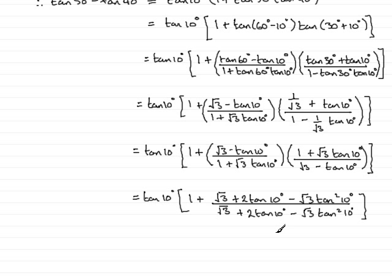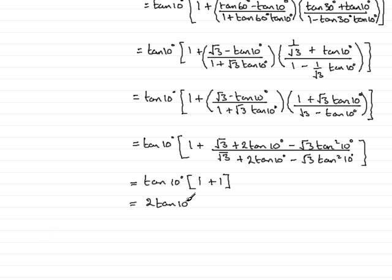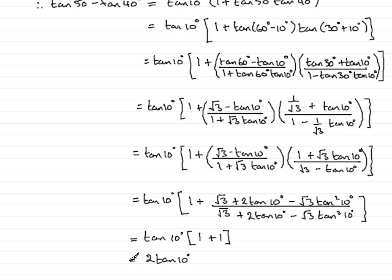Since that fraction equals 1, we get tan(10°) times (1 + 1), which is 2·tan(10°). So we have tan(50°) minus tan(40°) = 2·tan(10°). Rearranging, we therefore have the final proof: tan(50°) equals tan(40°) plus 2·tan(10°).